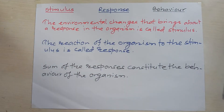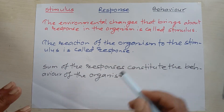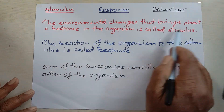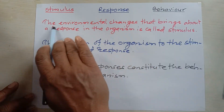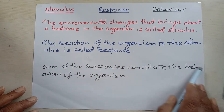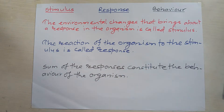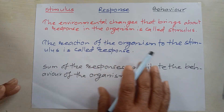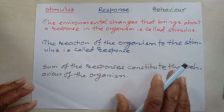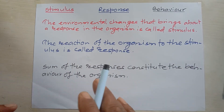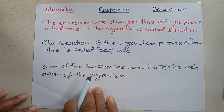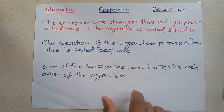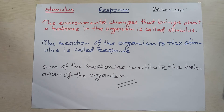For example, going back to the previous point: if you are sitting in a room and someone comes in, the environment changes, and that person who entered is the stimulus for you. Your reaction — whether you say something, just look at him, stay silent if it's a family member, or stand up and speak if it's a stranger — all these responses together constitute behavior. This is how we understand stimulus, response, and behavior before studying the nervous system.